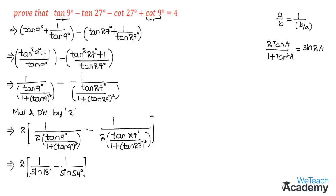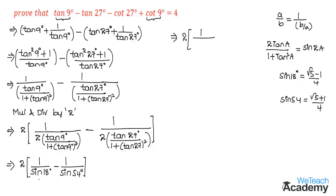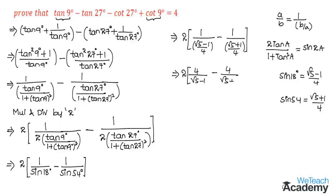We already know the value of sin 18 degrees, which is root 5 minus 1 by 4, and sin 54 degrees, whose value is root 5 plus 1 by 4. Substituting both these values, we get 2 times 1 divided by (root 5 minus 1 by 4) minus 1 divided by (root 5 plus 1 by 4), which gives us 2 times 4 by (root 5 minus 1) minus 4 by (root 5 plus 1).